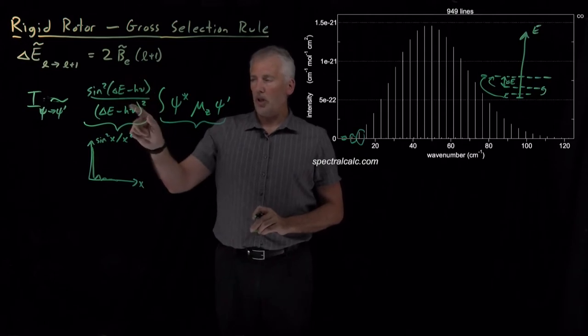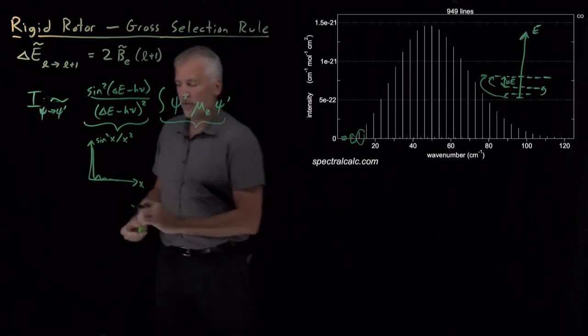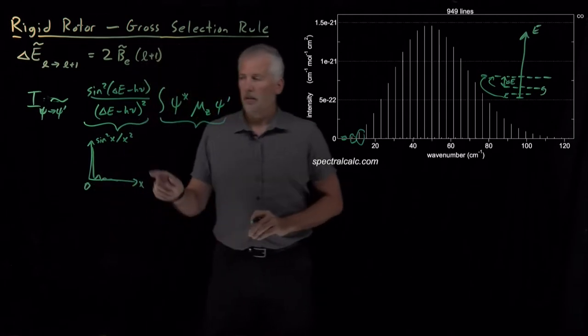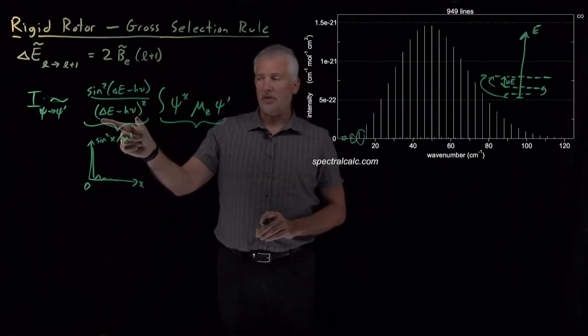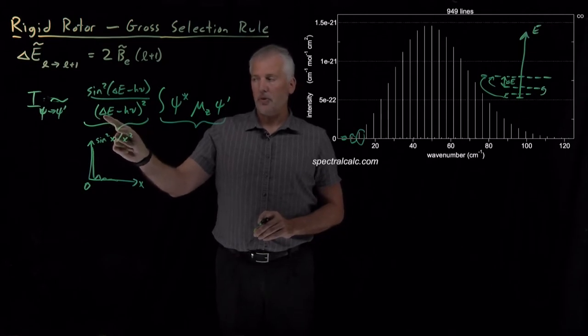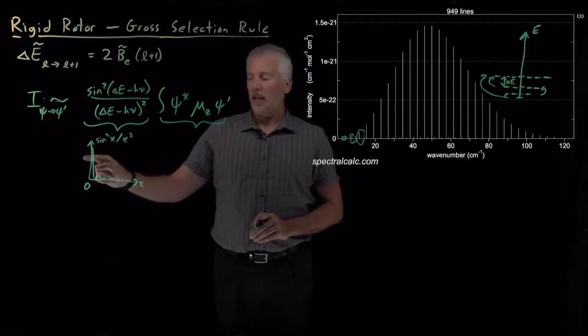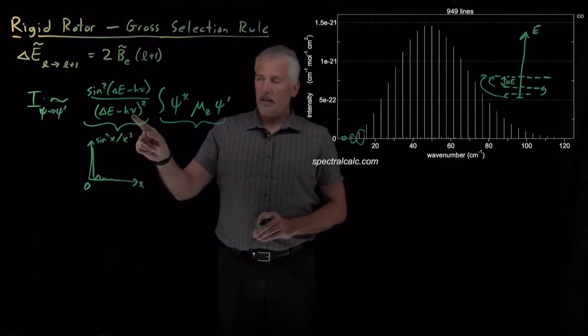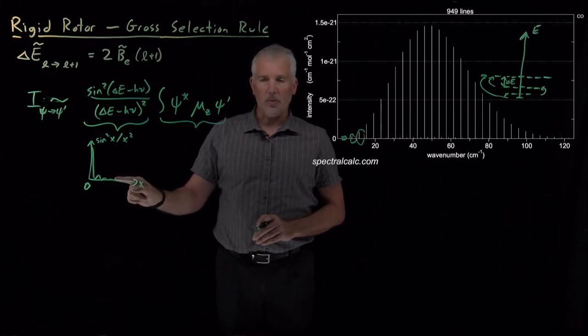So this term is large, the intensity of the absorption is large when x is equal to zero. For us, the quantity inside the sine squared and inside the denominator that gets squared is the difference between the energy of the transition and the energy of our photon. So when those things match exactly, the absorption is strong. If I deviate the frequency of light a little bit from what would be needed to induce that energy transition, the absorption is going to be quite weak.